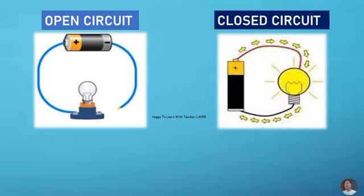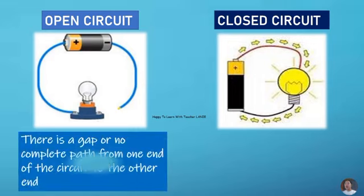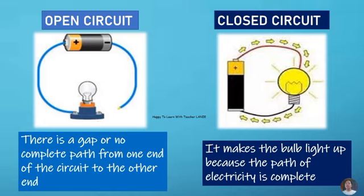Let us find out what is the difference between open circuit and closed circuit. Open circuit, there is a gap or no complete path from one end of the circuit to the other end. While closed circuit, it makes the bulb light up because the path of electricity is complete.